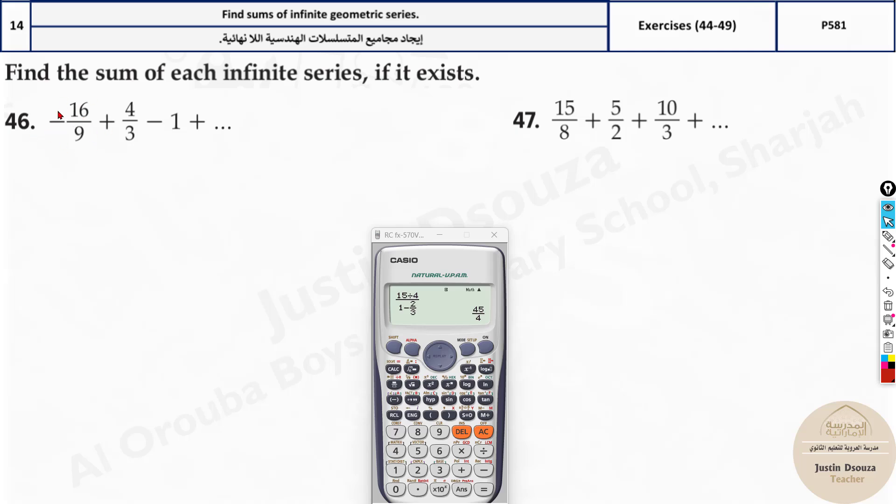Now here, remember, it's negative but doesn't matter. When you're finding the r, 4 divided by 3, and over here it is 16 divided by 9. But don't forget the sign, minus. It's negative 3 fourth. But is r value less than magnitude of it? Is it less than 1? Yes, 3 fourth is less than 1. So you can find the sum.